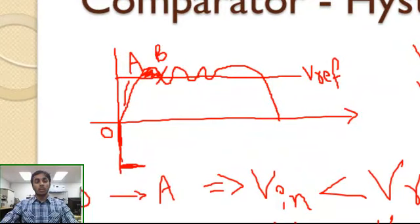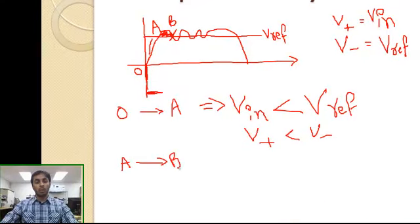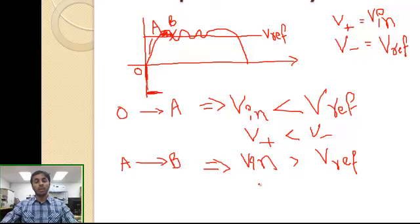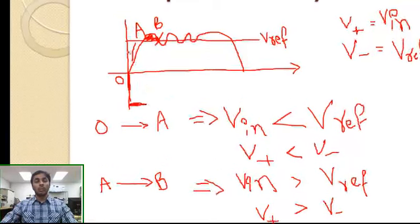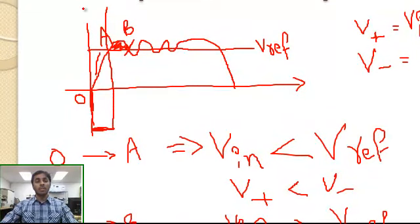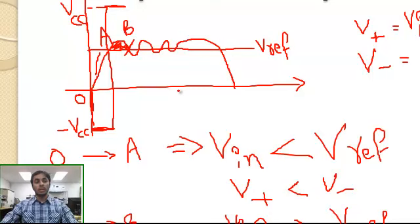From point A to point B, V-in is greater than the reference. The input signal is applied to the positive terminal and the reference is at the negative terminal, so V-positive is greater than V-negative. In that case, the output of the comparator shoots toward the maximum value of VCC. Considering an ideal op-amp, the output is +VCC from A to B, and was -VCC before.